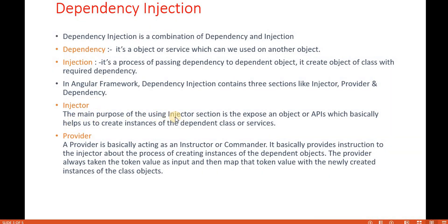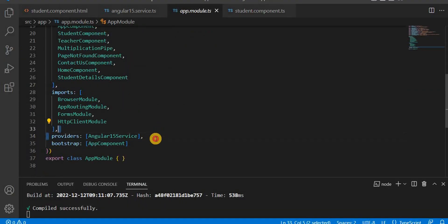The injector's main purpose is to expose an object or API that helps us create instances of dependent classes or services. The provider acts as an instructor or commander — it provides instructions to the injector about the process of creating instances of dependent objects. We have to declare the service in the provider; if we do not, the service will not work.